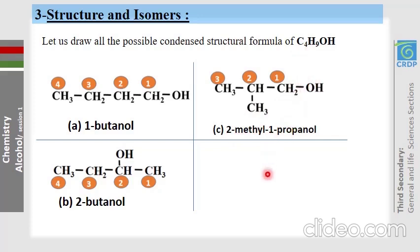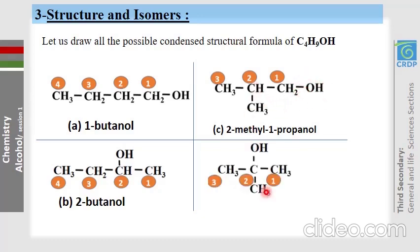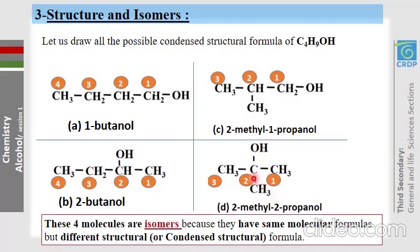For the fourth isomer, move the OH group to carbon number 2 of the branched structure. You get 2-methyl-2-propanol. These four structures all share the same molecular formula but have different structural formulas — we call them isomers.